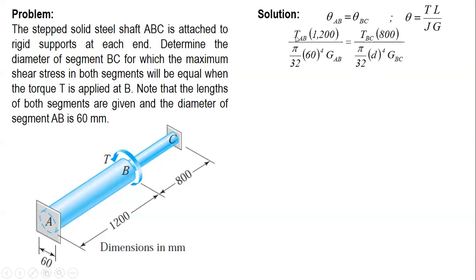So we have TAB, the length of AB is 1,200 millimeters, and then polar moment of inertia pi over 32 d raised to 4, and modulus of rigidity. For BC, TBC, the length is 800, unknown diameter, and modulus of rigidity. Now there's only one material, steel, therefore same modulus of rigidity. So this can be cancelled out as well as pi over 32.